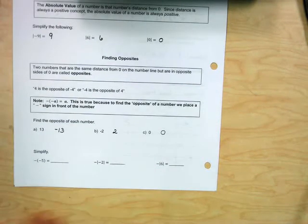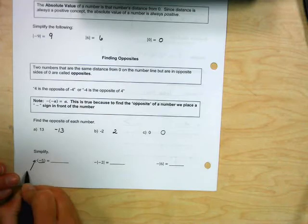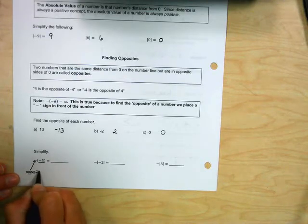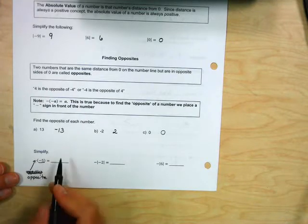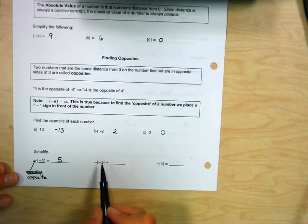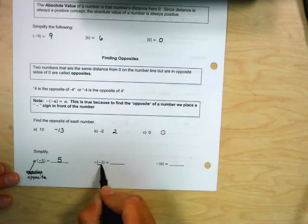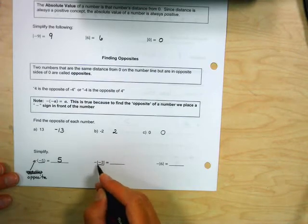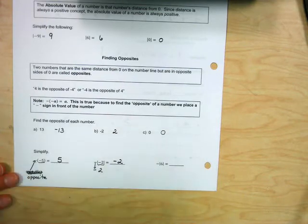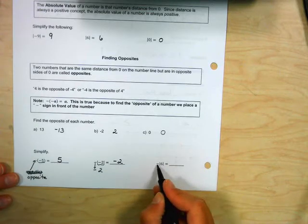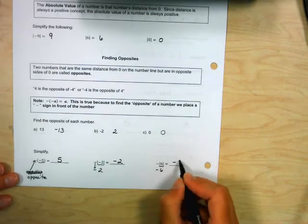Here we start with negative five and take the opposite of it — so the opposite of negative five is five. For a more complex expression: 'the opposite of the absolute value of negative two' — first find the absolute value of negative two, which is two, then take its opposite, giving negative two. Similarly, the opposite of the absolute value of six: absolute value of six is six, and its opposite is negative six.